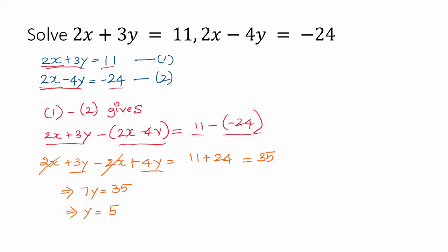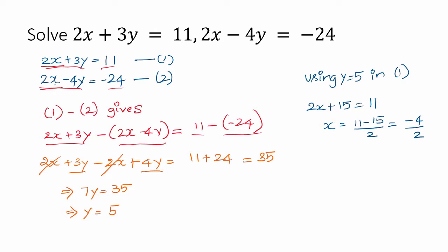So y equals 5. Now, how do we calculate x? Using y equals 5 in equation 1: 2x plus 3y, that is 3 times 5 is 15, equals 11. So x equals 11 minus 15 divided by 2, which is minus 4 divided by 2, so x equals minus 2. Therefore x equals minus 2 and y equals 5.